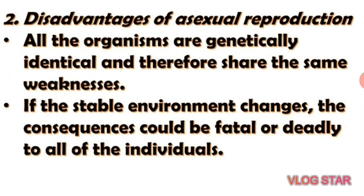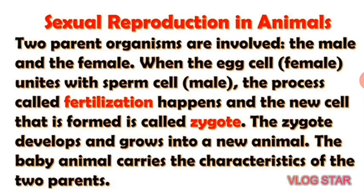Disadvantages of asexual reproduction: All organisms are genetically identical and therefore share the same weaknesses. For example, if the parent has a sickness, the offspring will likely inherit that sickness. Additionally, if the stable environment changes, the consequence could be fatal or deadly to all the individuals.